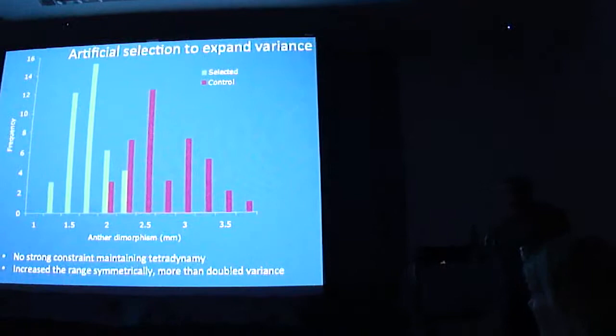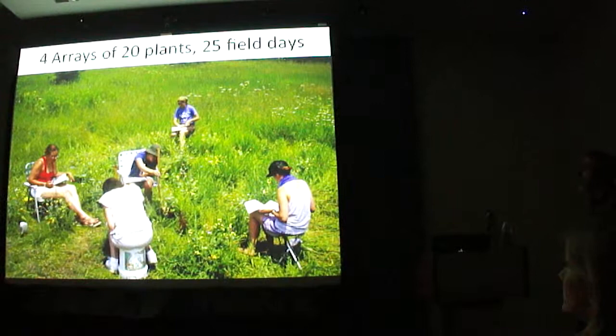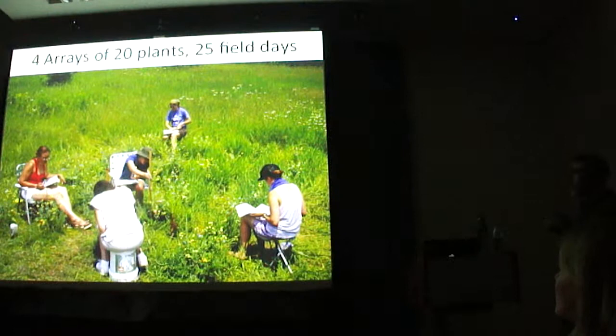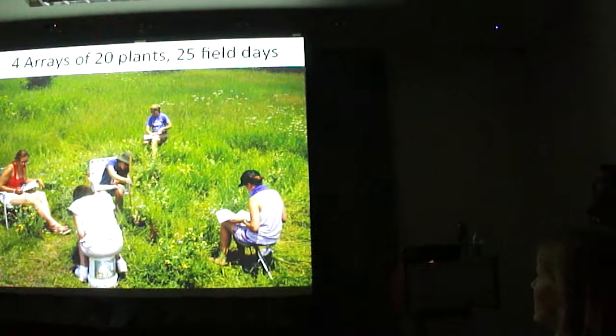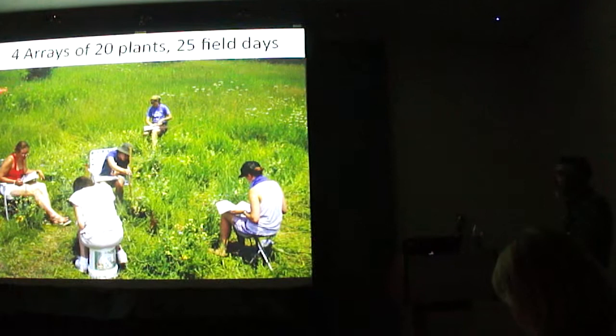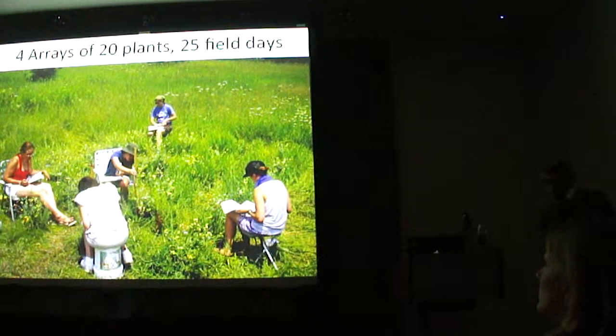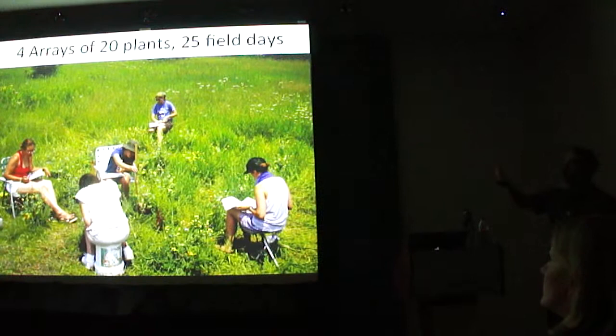More importantly, we increased the range of the trait symmetrically — not a ton, about 0.3 millimeters on either end — but we more than doubled the variance, giving us increased statistical power. We took 80 plants, 40 from each of the selection and control lines, and created four arrays of 20 plants each, with 10 control and 10 selection per array. We took them into the field; only one array went out on any given day for most of the day — on average six and a half hours. We measured floral traits and stamen lengths on every plant, observed pollinators on every plant each day, and marked every open flower so every seed set could be attributed to a specific day. Each array went out six or seven times over a two-month period, for a total of 25 field days.